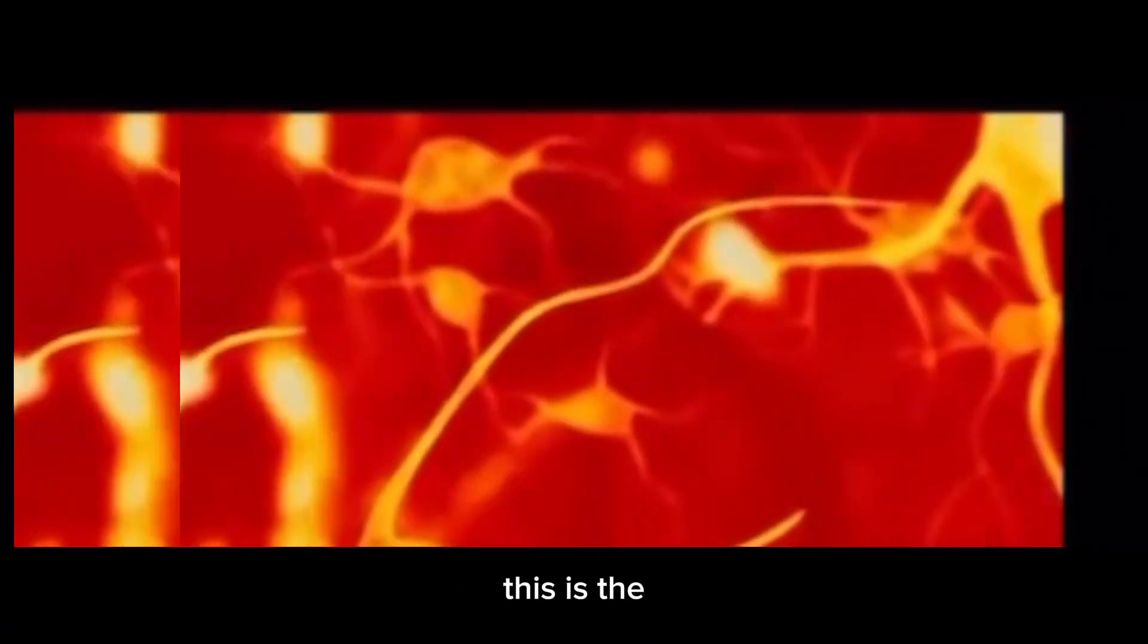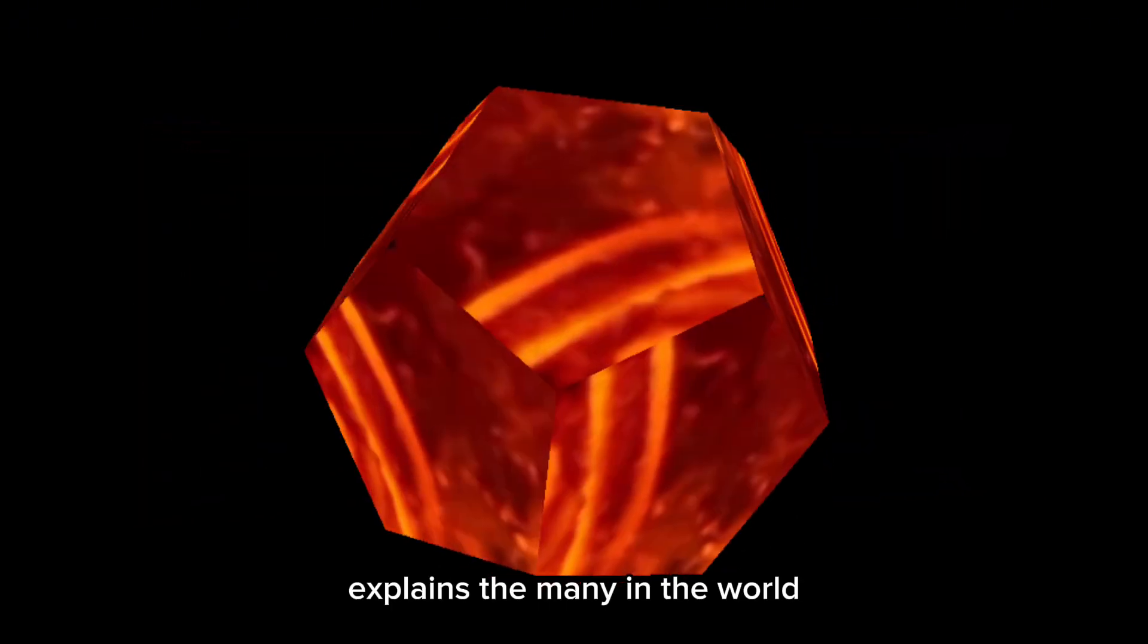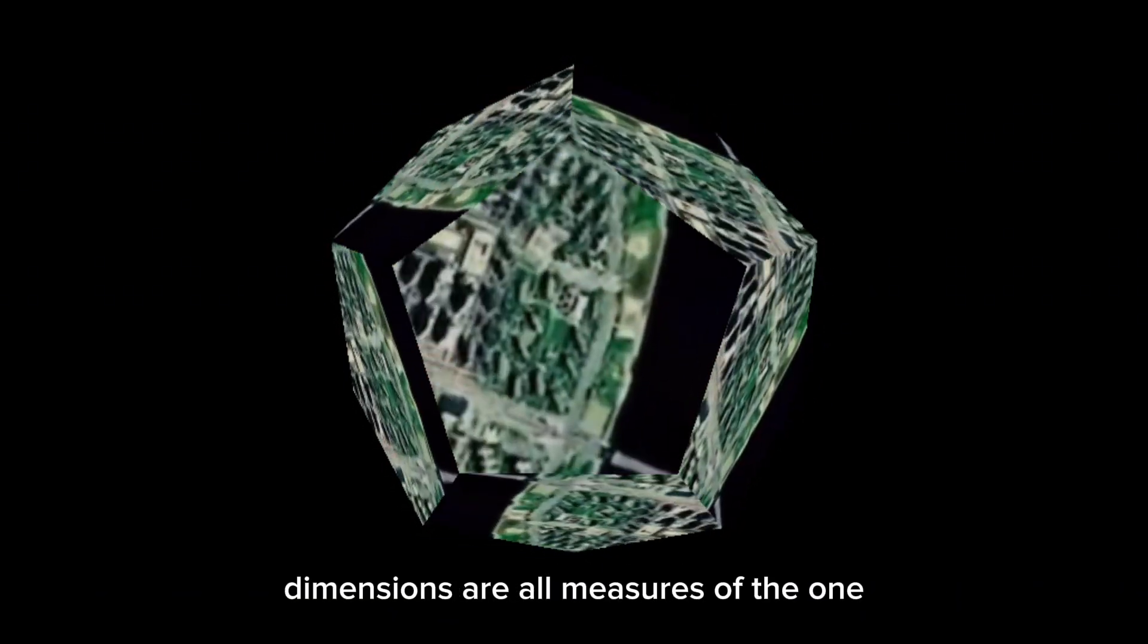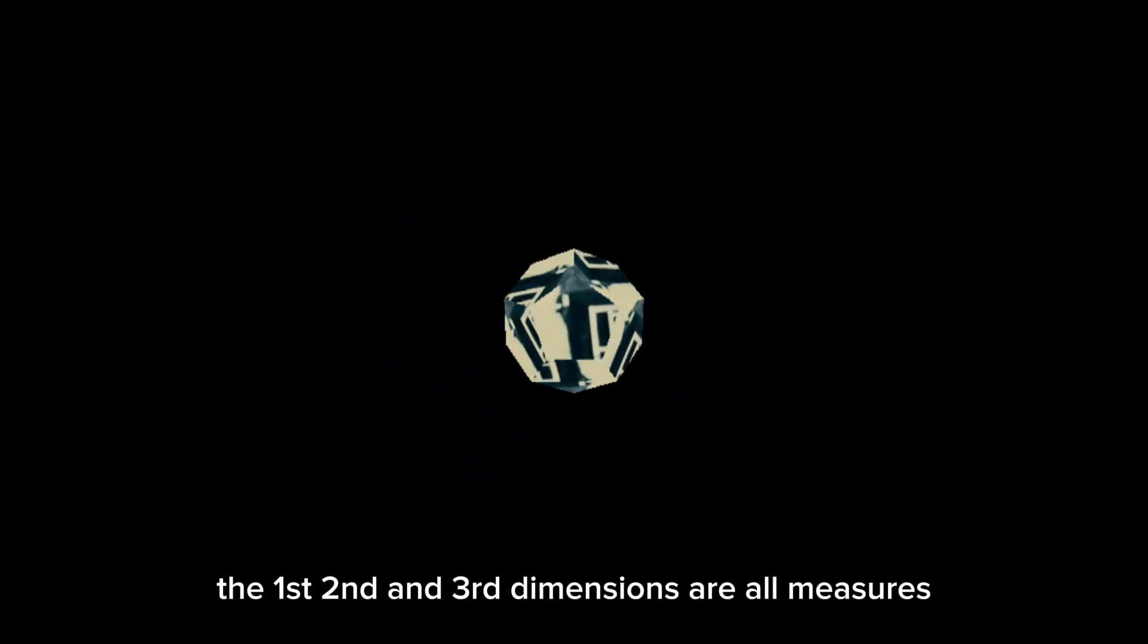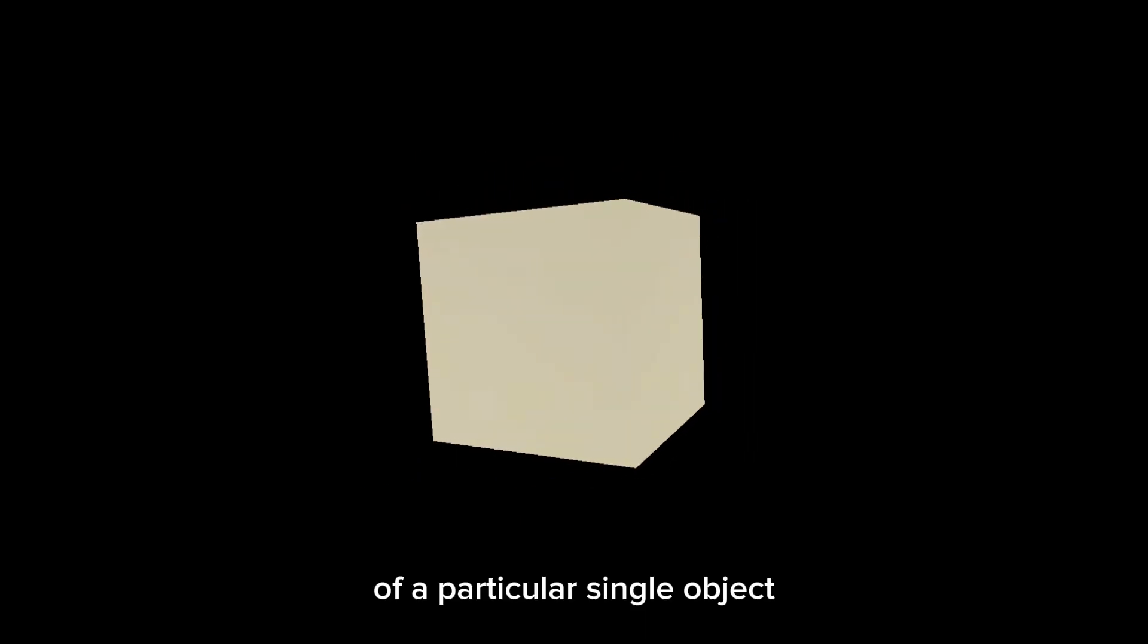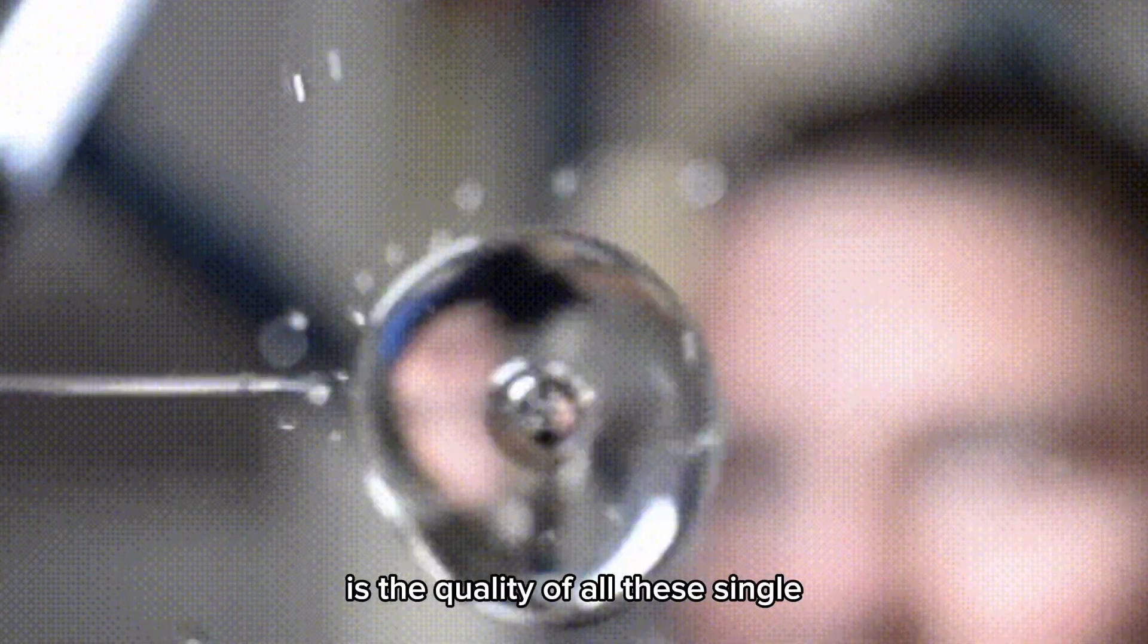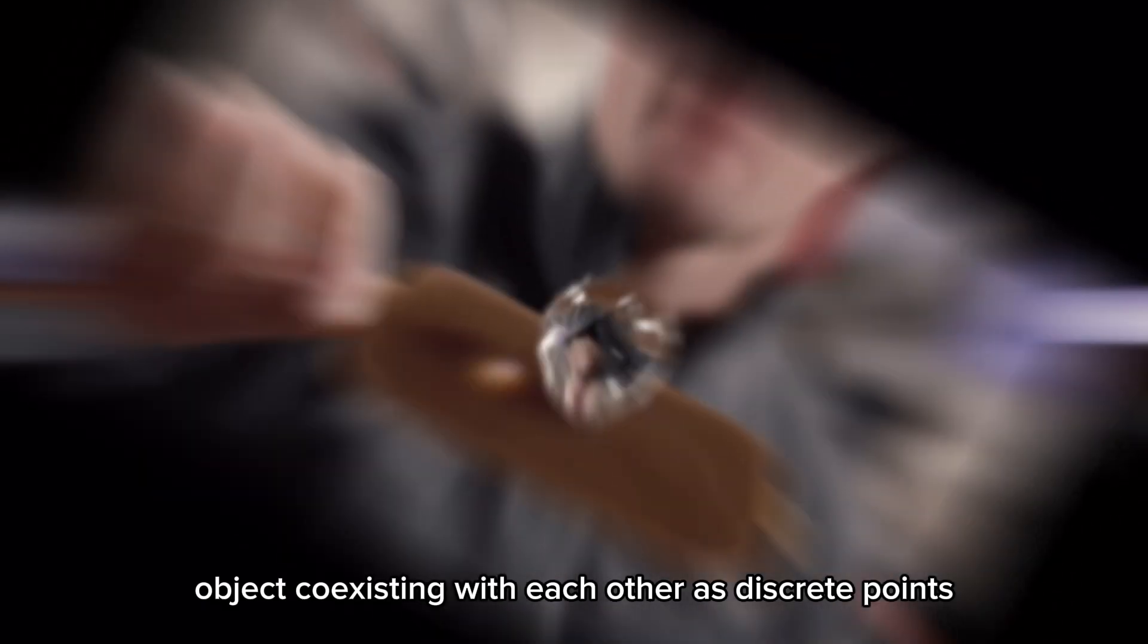This is the definition of multitude or multiplicity—the many in the world. Ironically, the zero dimension explains the many in the world, whereas the other dimensions are all measures of the one. The first, second, and third dimensions are all measures of a particular single object, whereas the zero dimension is the quality of all these single objects coexisting with each other as discrete points.